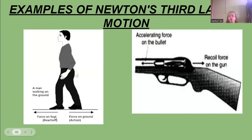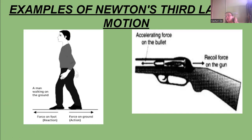Looking at the picture: the man is walking, forcing his foot backward — he pushes force on the ground backward, that's the action. And the ground is applying force on the foot — that is the reaction. That is how the man walks on the ground. For the gun: pressing the trigger applies force on the bullet, that's why the bullet goes forward. The bullet then exerts a recoil force on the gun — that is the reaction.